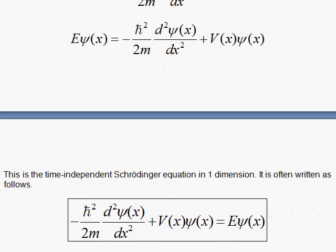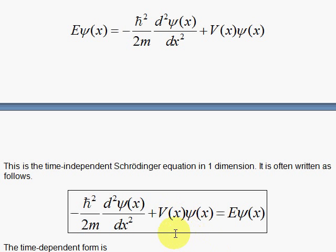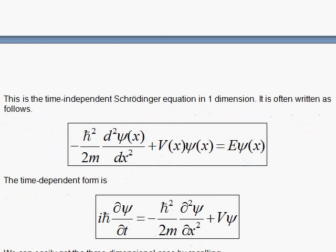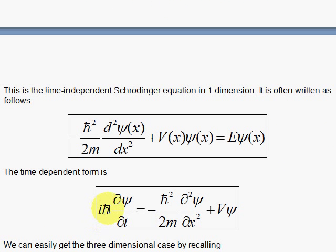So here we go, the time-independent Schrödinger equation. I wrote here the energy on the right-hand side and if you want the time-dependent case, you simply go back to what we had earlier, iℏ, the partial with respect to t and these are the equations in one dimension.